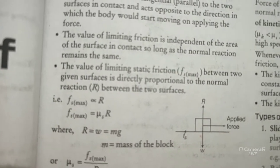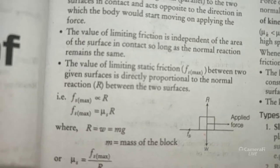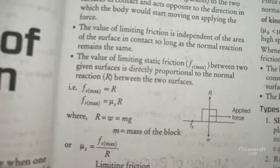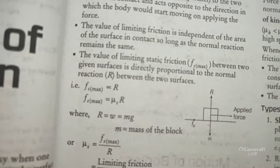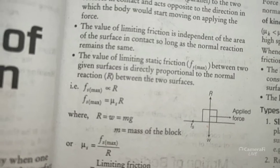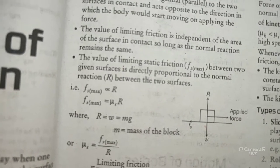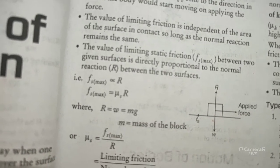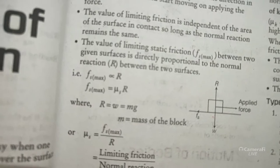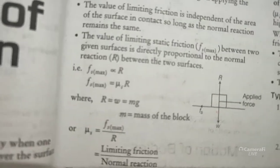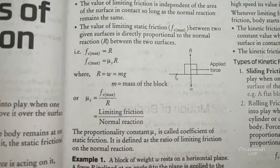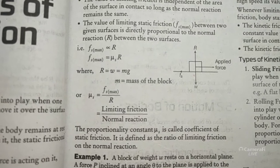The static friction force fs is directly proportional to normal reaction R, so fs = μs × R. Here μs is the coefficient of static friction. μs is the ratio of limiting friction to normal reaction, and friction is always opposite to the direction of motion.